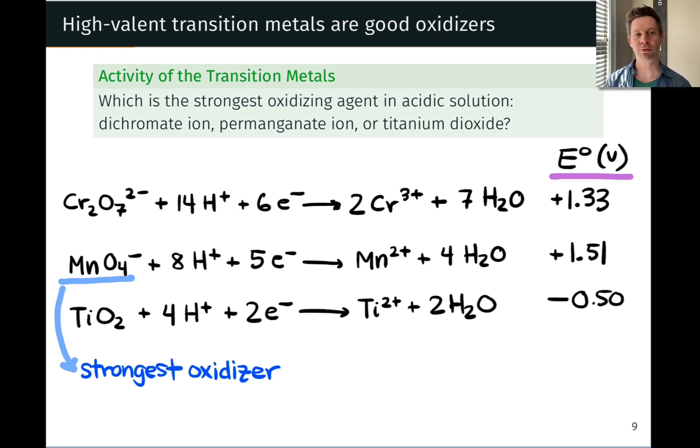The focus here is on dichromate, permanganate - these are oxyanions containing chromium and manganese respectively - and titanium dioxide, which is an oxide of titanium with titanium in the plus 4 oxidation state.